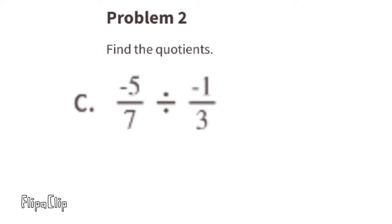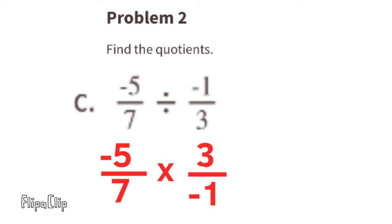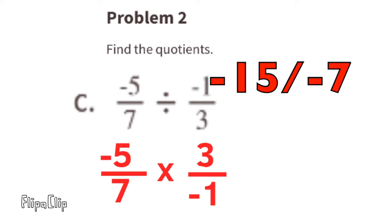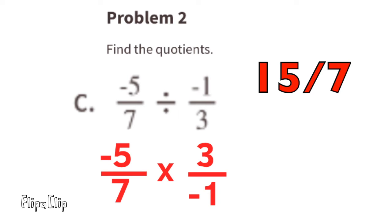Part c: this is a negative divided by a negative, so the quotient is going to be positive. We change this to a multiplication problem by multiplying negative 5 sevenths by the reciprocal of negative 1 third, which is 3 over negative 1. Negative 5 times 3 is negative 15, and 7 times negative 1 is negative 7. A negative divided by a negative is positive, so the quotient is 15 over 7.